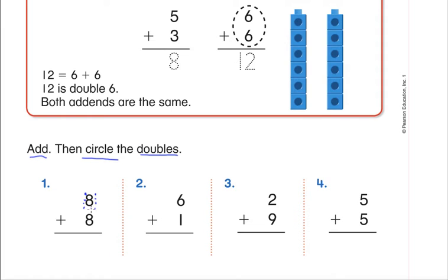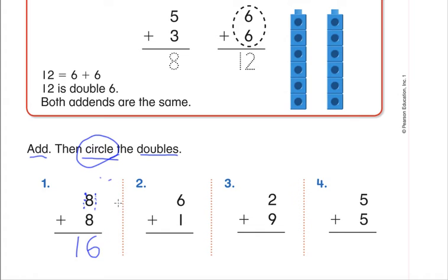I'll make one pattern and count: eight, nine, ten, eleven, twelve, thirteen, fourteen, fifteen, sixteen. So counting all those dots — it's just counting on — we learned that eight plus eight is sixteen. Now we have to think: is this a doubles fact? The directions say to add the sentence, then circle the doubles facts. Eight and eight are the same number, so it is a doubles fact — we need to circle the whole problem.